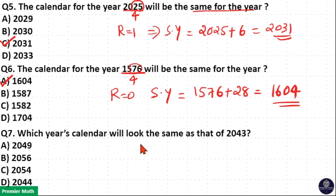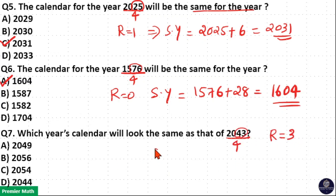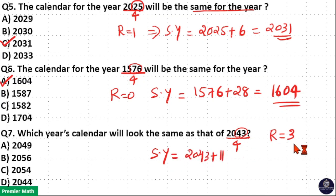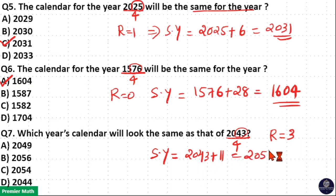For 2043: divide by 4 — take 43 by 4, which gives remainder 3. Since the remainder is 3, the same calendar year equals 2043 plus 11, which gives 2054.